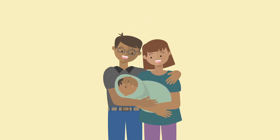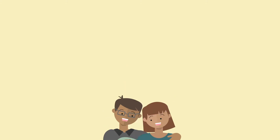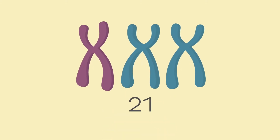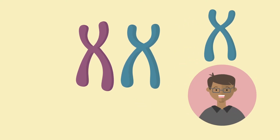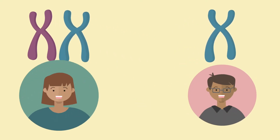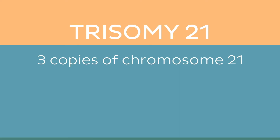However, it might happen that one of the parents passes on an extra chromosome — 24 instead of 23. If the extra copy is of chromosome number 21, then the baby will have three copies of chromosome 21: one inherited from one parent and two mistakenly inherited from the other. This is called trisomy 21, which literally translates to three copies of chromosome 21 — what you might otherwise know as Down syndrome.